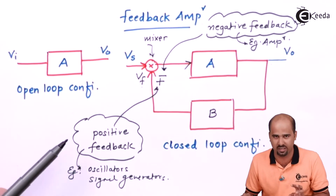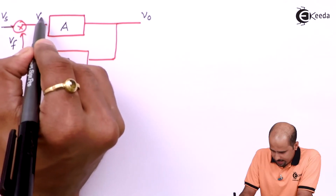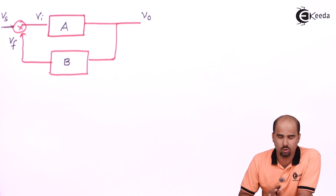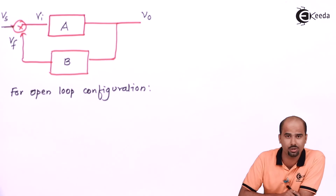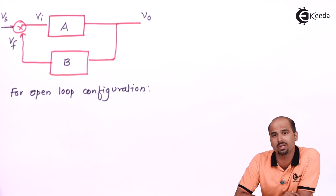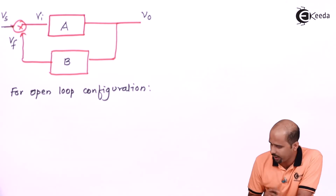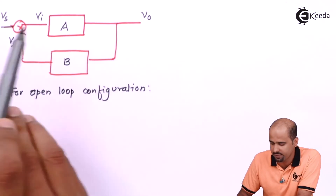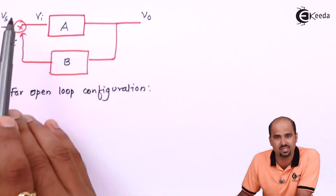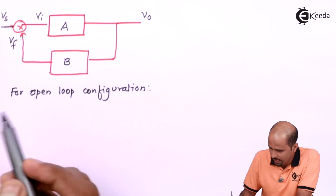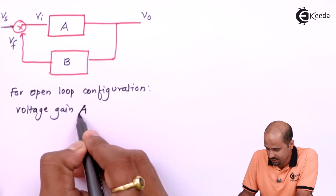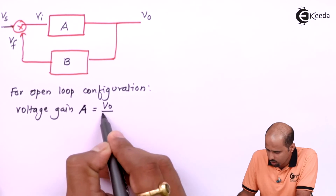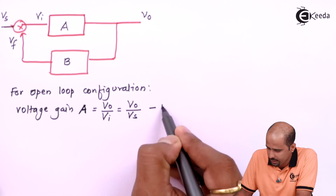Now we look at the mathematical perspective of negative and positive feedback in generalized form. Taking input as voltage and output as voltage, this forms a voltage amplifier with gain equal to output voltage divided by input voltage. For the open loop configuration — meaning no feedback provided — B does not come into picture, so Vi equals Vs, and the voltage gain A equals Vo divided by Vi, which equals Vo divided by Vs. Call this equation 1.